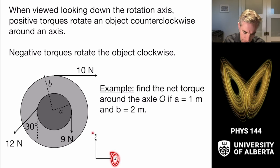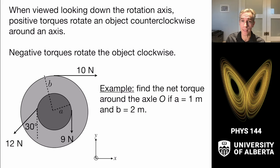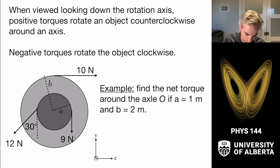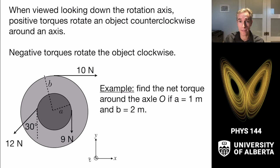With the x-y axis system here, the z-axis is coming out of the plane of the screen toward you. When we're looking down on that, counterclockwise torques will be positive and clockwise torques will be negative.